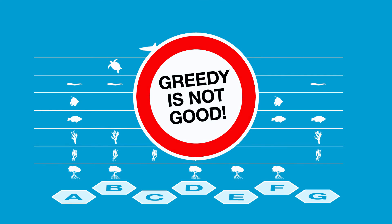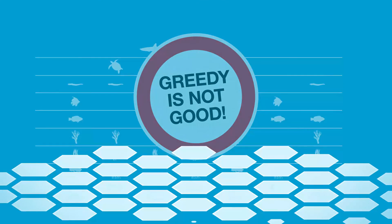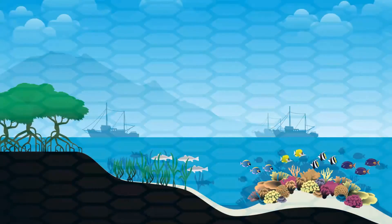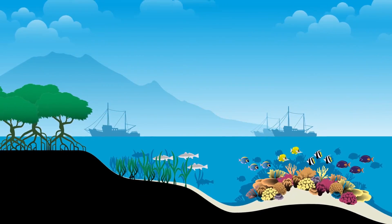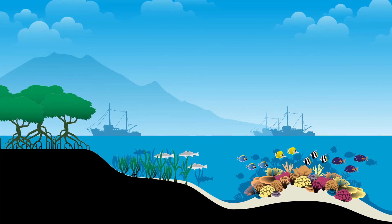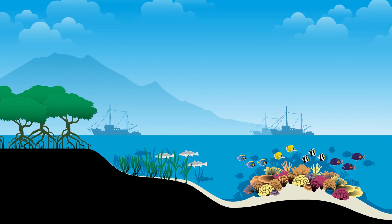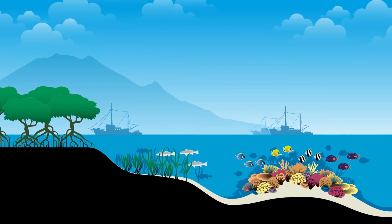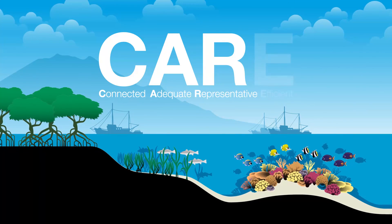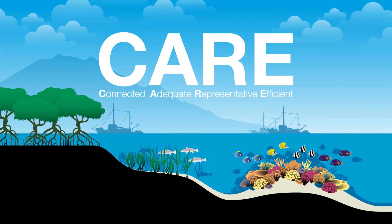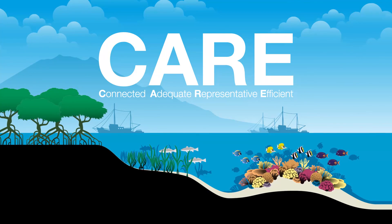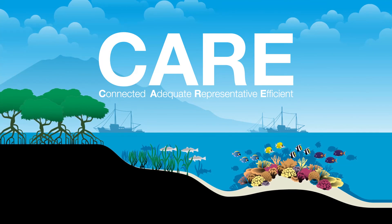Finding efficient reserve systems that represent all conservation features is not as simple as it looks — greedy is not good. Imagine solving this problem for the Great Barrier Reef, where there are over 200 conservation features across 17,000 sites. While these complexities are the subject of ongoing research in ecology and conservation science, current systematic conservation planning approaches that use the core CARE principles represent our best opportunity to achieve optimal conservation plans for coastal and marine ecosystems.